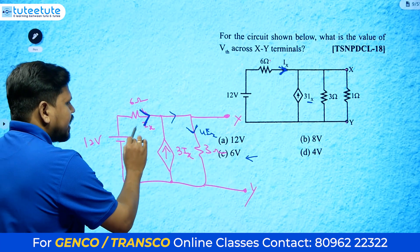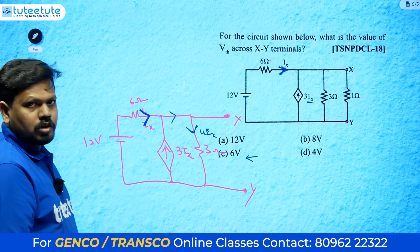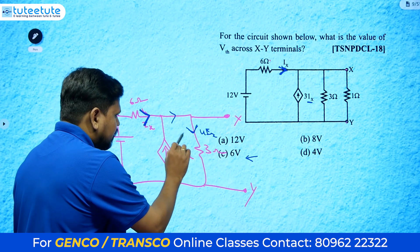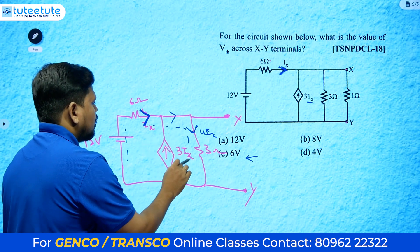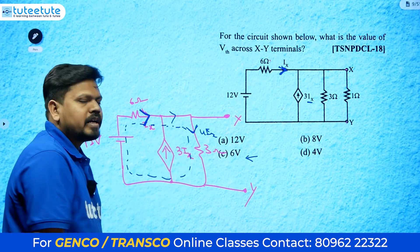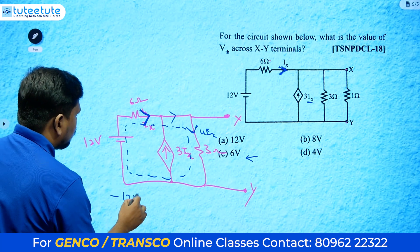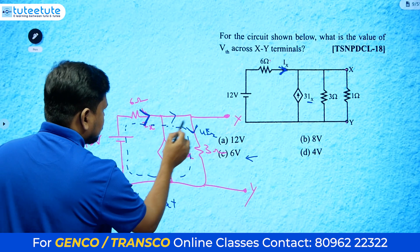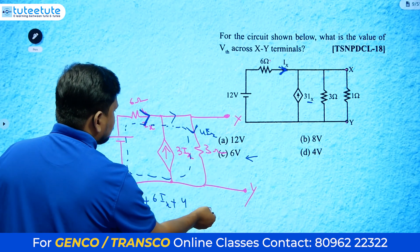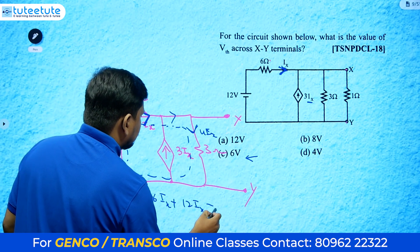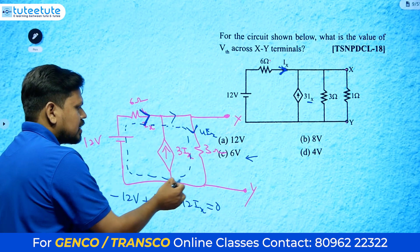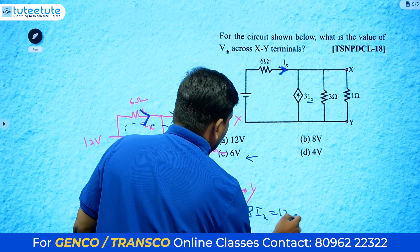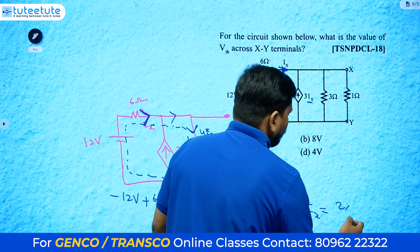The KVL equation is: minus 12 + 6*ix + 12*ix = 0, so 18*ix = 12, giving ix = 2/3 amperes. The voltage across XY is the voltage across the 3-ohm resistor: 4*ix * 3 = 4*(2/3)*3 = 8 volts. So vth = vxy = 8 volts, and the answer is option B.